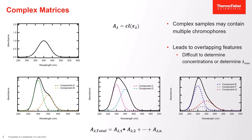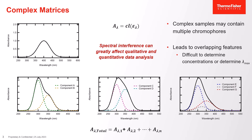For samples where more information is known about the various chromophores, including concentrations of specific components in solution, this problem can be avoided. However, for the majority of samples the exact concentrations may be unknown, allowing spectral interference to affect both qualitative and quantitative results.